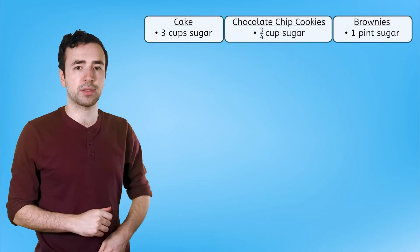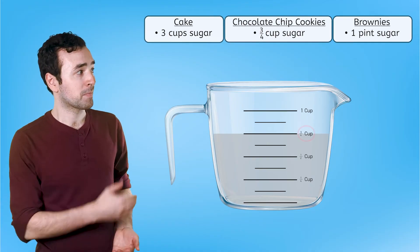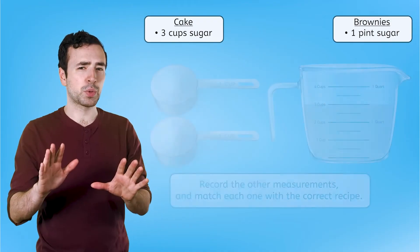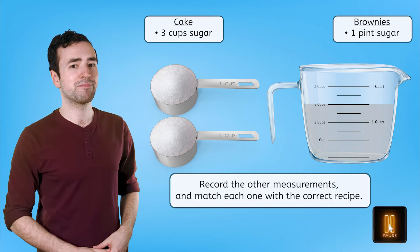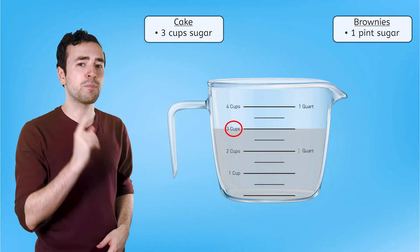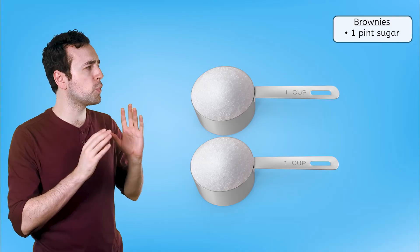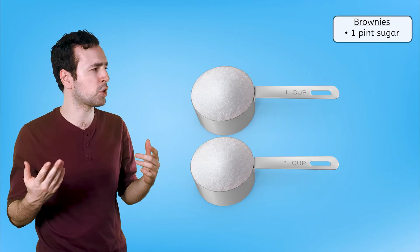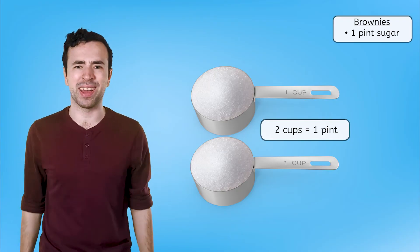Let's check out the sugar measurements next. What's the volume of sugar in this measuring cup? Looks like three-fourths of a cup, which means it goes with the cookie recipe. Pause here to record the other sugar measurements and match each one with the correct recipe. Mia filled this quart measuring cup to the three-cup mark, which matches how much sugar is needed for the cake. And then here we have two cups. None of the recipes need just two cups of sugar — but the brownies need one pint, and two cups is equal to one pint.